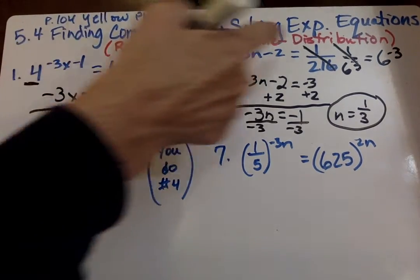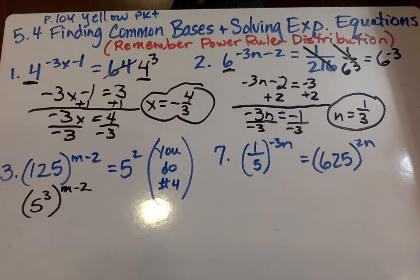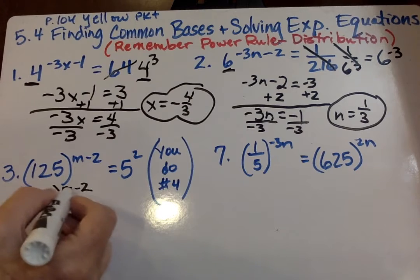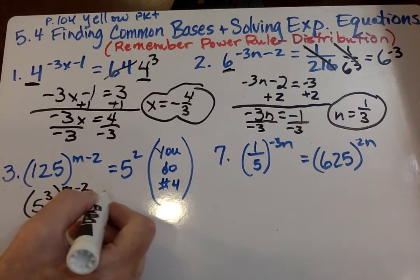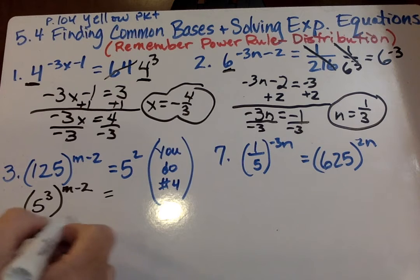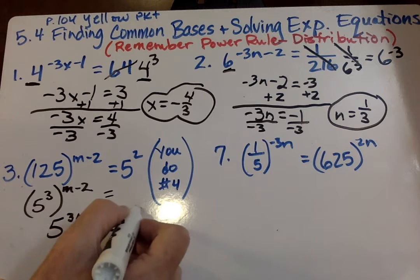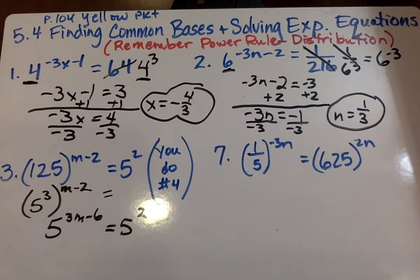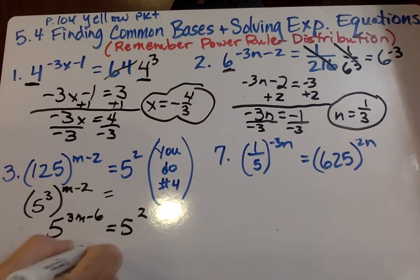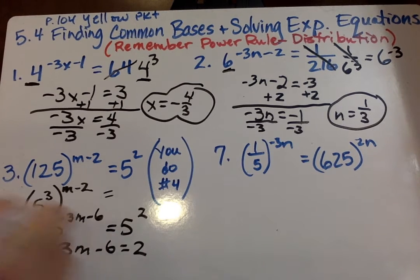And this is where that distribution or the power rule comes into play, the distributive property. Because we have to say m times 3 and negative 2 times 3. So we get 5 to the 3m minus 6 equals 5 squared. Because we have the same bases here.